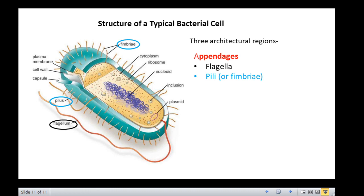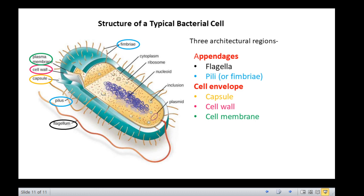The second region is the cell envelope, which consists of a capsule, cell wall, and cell membrane. The third region is the cytoplasmic region that contains the DNA, both genomic and plasmid, and ribosomes, which are the sites of protein synthesis and various cell inclusions. We shall look at each of these structures one by one in the coming lectures.